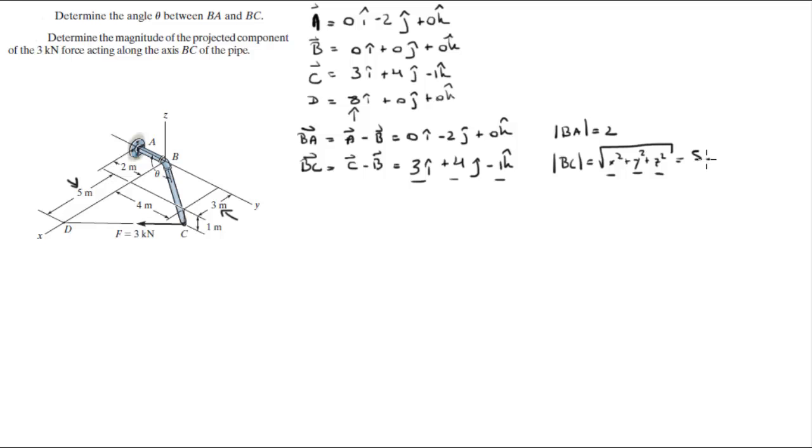Now that we have the two vectors and their magnitudes we can easily find the angle between them because we know that by definition the dot product of BA and BC is equal to the magnitude of BA times the magnitude of BC times the cosine of the angle between them.